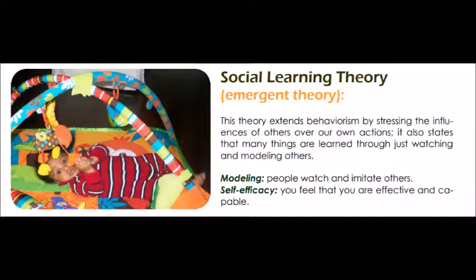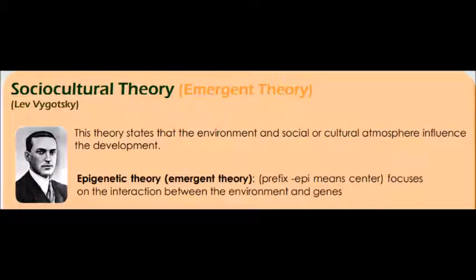Consider socio-cultural theory, which states that environment and social or cultural atmosphere influence development. This emergent theory combines information from environment, social, and cultural domains to form a single theory. Epigenetic theory is also an emergent theory that focuses on the interaction between environment and genes — combining environment with biology, two different academic areas, to produce a new theory.